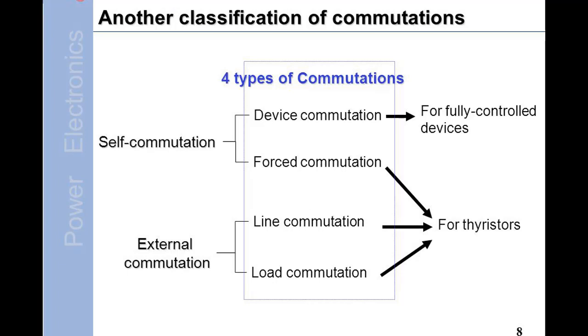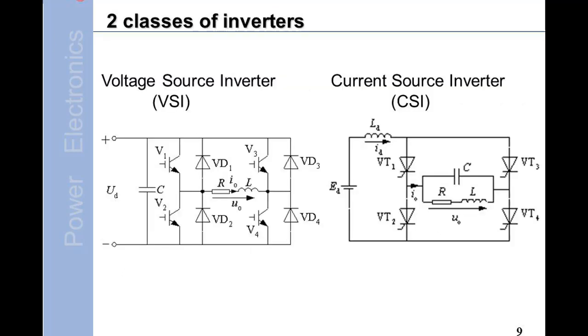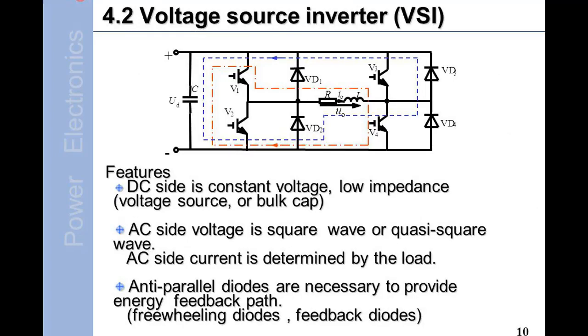Another classification of commutations: four types of commutations for fully controlled devices. Device commutation (self-commutation), forced commutation, line commutation, and load commutation for thyristors (external commutation).